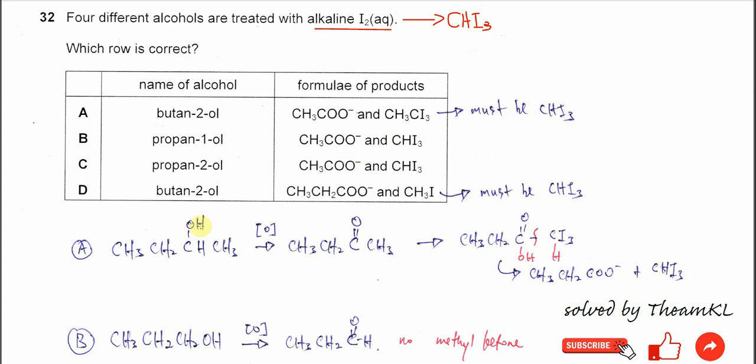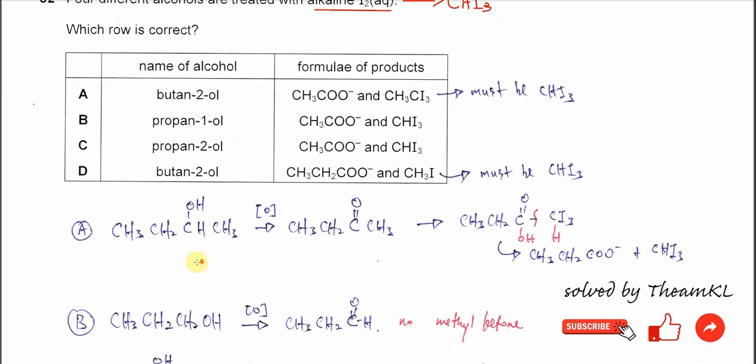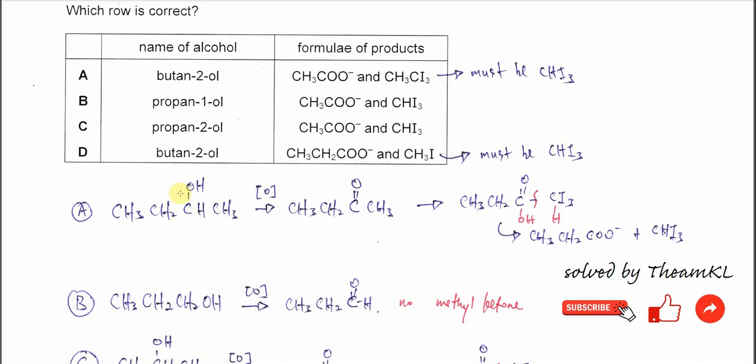Only the alcohol with this group will produce the methyl ketone. For example in A we have butane-2-ol. Butane-2-ol has this group, CHOHCH3. So when alcohol with this group it can produce methyl ketone.